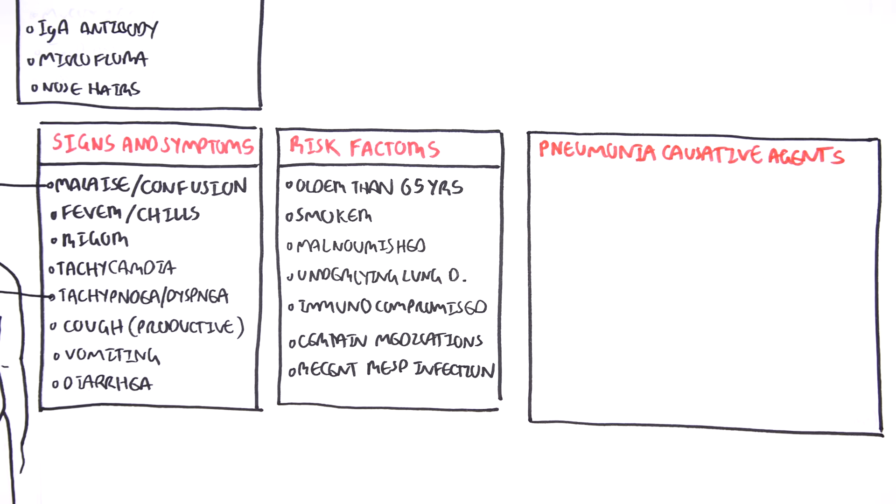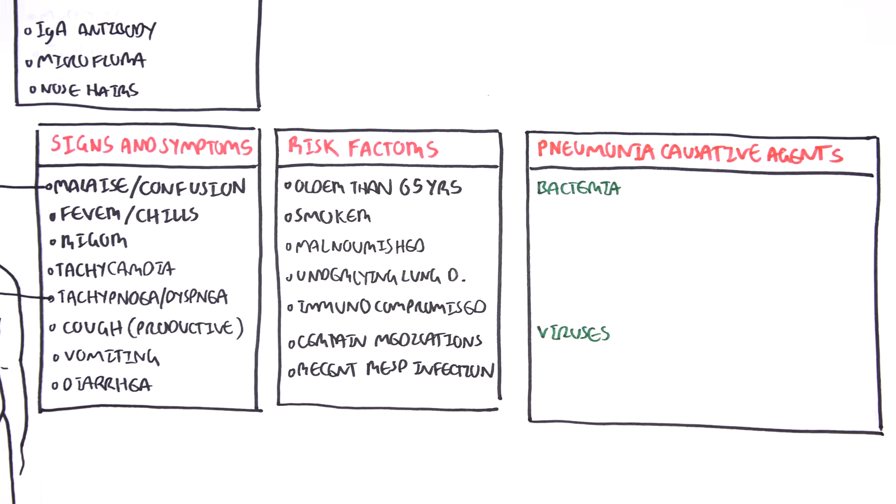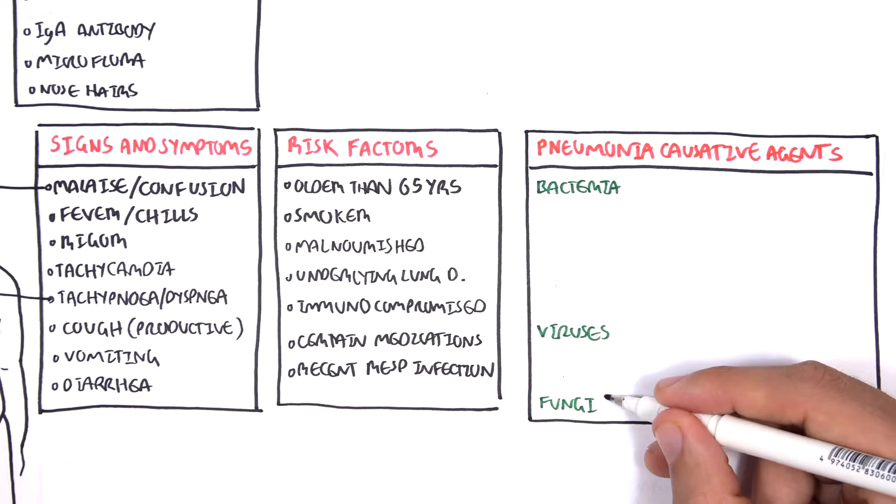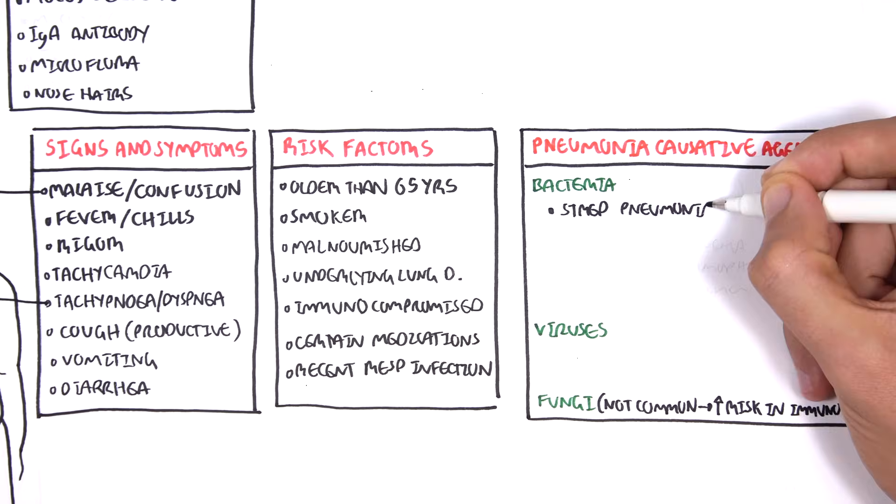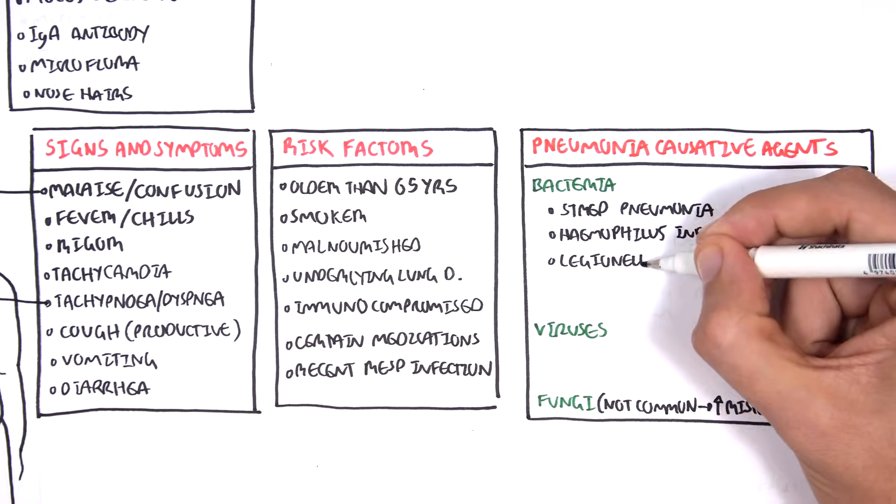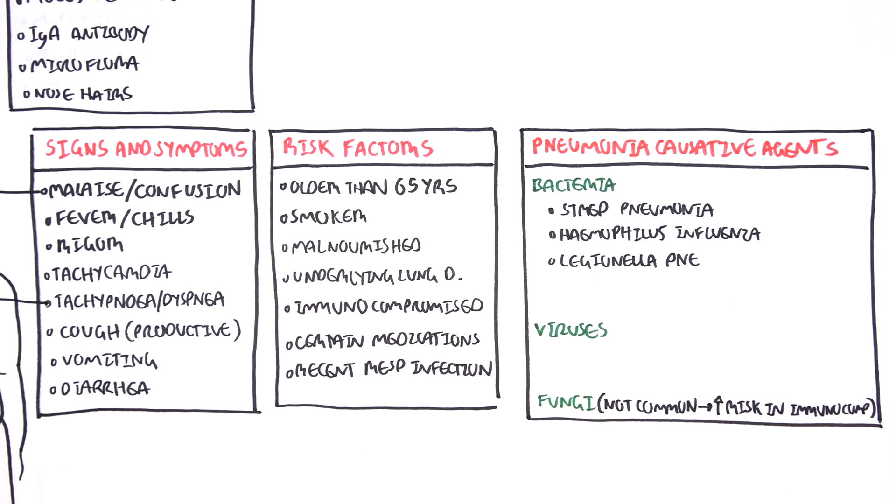Now the causative agents of pneumonia in summary can be divided to bacteria, viruses, and fungi. Fungi are less common and fungal pneumonia is usually more often seen in those who are immunocompromised. Bacteria is the most prevalent cause of pneumonia. Some major bacteria, causative bacteria include strep pneumonia, haemophilus influenzae, legionella pneumoniae, staphylococcus aureus, and mycoplasma species.